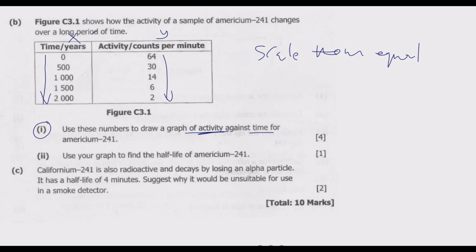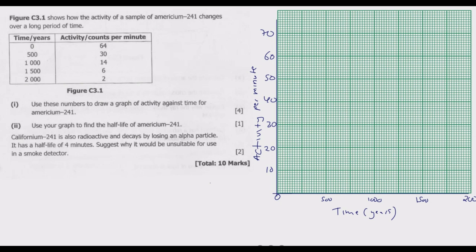The minimum is 2, so start from 0. The maximum is 64, so if we increase by units of 10, we can go up to 70. Similarly, the time maximum is 2000, minimum is 0, so we can increase in units of 500 as shown. Let us move to the graph paper to answer this question.